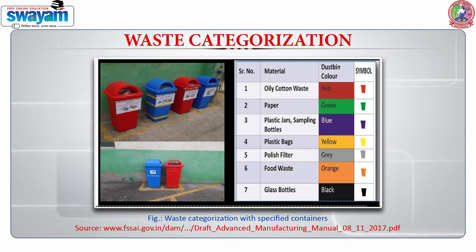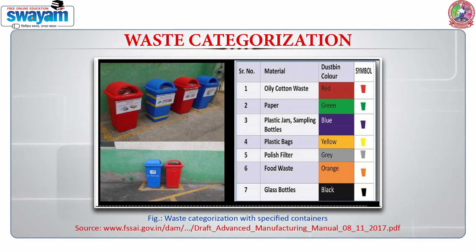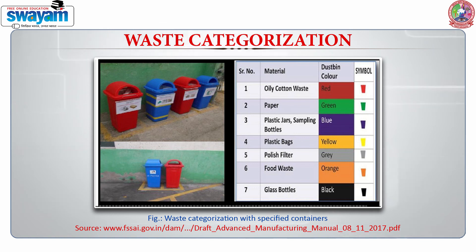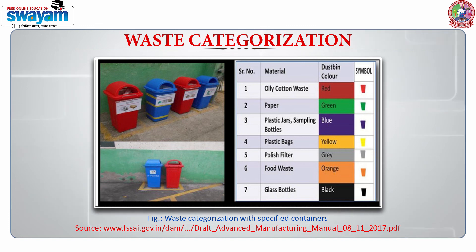For example, red is used for oily waste, green for paper waste, blue for plastic jars and sampling bottles, yellow for plastic bags, gray for polish filters when discarded, orange for food waste, and black for glass bottles.